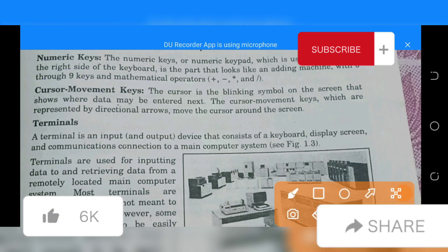The numeric keys and numeric keyboard, which is usually located on the right side of the keyboard, is the pocket that looks like an adding machine with zero through nine keys and mathematical operators including plus, minus, multiplication, and division signs.